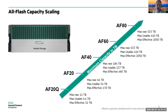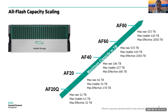This is raw capacity. Fortunately, Nimble is also very efficient — you get about 73 to 75 percent usable to raw. So out of that 533 terabytes in a single system, you can get 410 terabytes usable, and then your effective capacity at 5x data reduction would be over 2 petabytes.